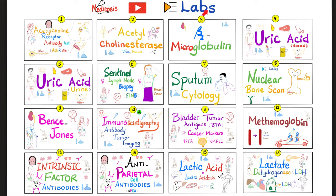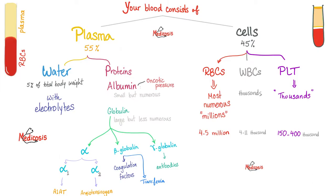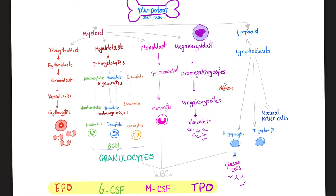Please watch the videos in this playlist in order. As you know, your blood is made of plasma and cells. Plasma is water plus plasma proteins, including albumin and globulin. The cells are red blood cells, white blood cells, and platelets. The white blood cells are neutrophils, basophils, eosinophils, monocytes, and lymphocytes.